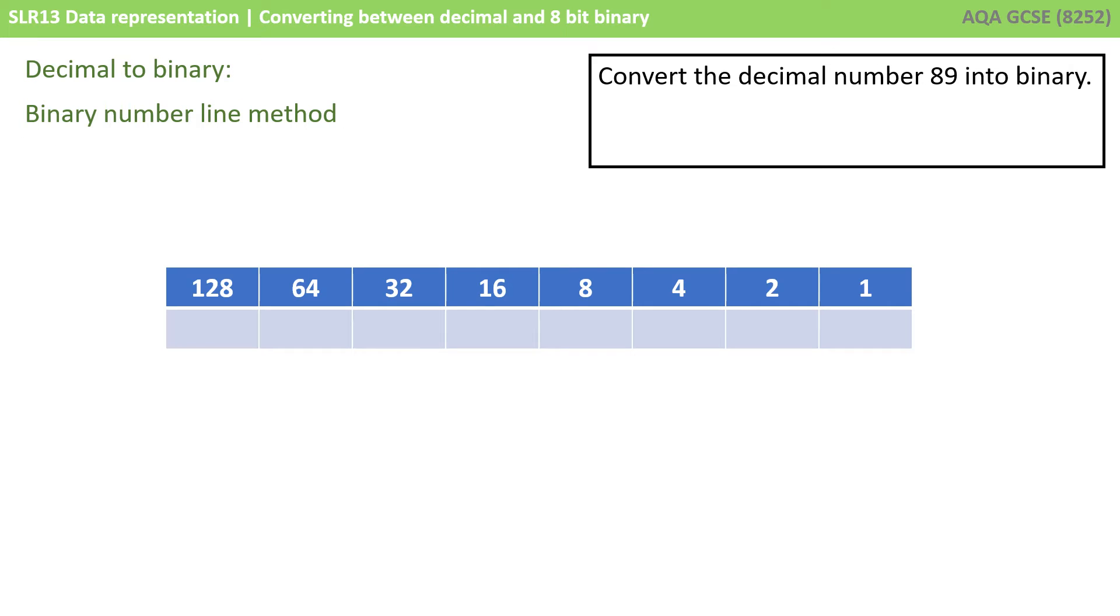Now let's look at the binary number line method. We're going to perform the same thing here. We're going to convert the decimal number 89 into binary. The first thing you'll notice is I've written out a binary weighting line. And we went through these in the previous video on base number systems. You'll notice that every column of the binary weighting line times by 2 as we move left.